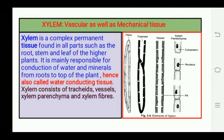Xylem is a complex permanent tissue found in all parts — root, stem, and leaf — of higher plants. It is both a vascular and a mechanical tissue, providing mechanical support to plants simultaneously. The main function of xylem is the conduction of water and minerals from roots to the top of the plant, which is why it is also called water-conducting tissue.